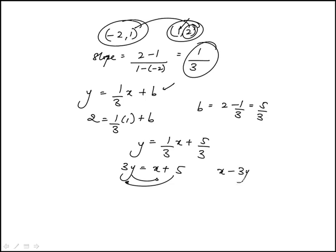So it becomes x minus 3y is minus 5, because the 5 moves over here becomes minus 5, and the 3y goes here becomes minus 3y, so it's x minus 3y equal to minus 5.